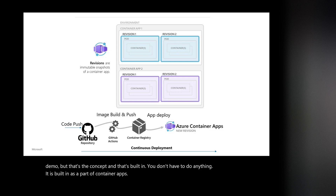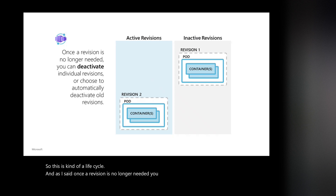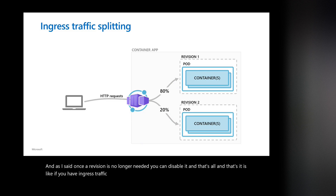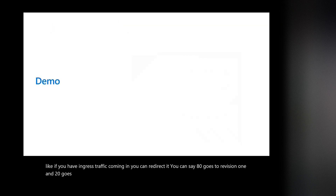This is the lifecycle: once a revision is no longer needed, you can disable it. If you have ingress traffic coming in, you can redirect it — you can say 80% goes to revision one and 20% goes to revision two.